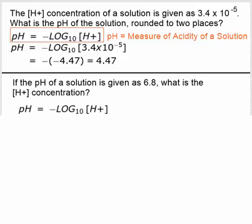By multiplying both sides by negative 1, we get negative pH equals base 10 log of H plus. Now we can rewrite this in exponential form. And we get 10 to the negative pH equals the hydronium concentration H plus.